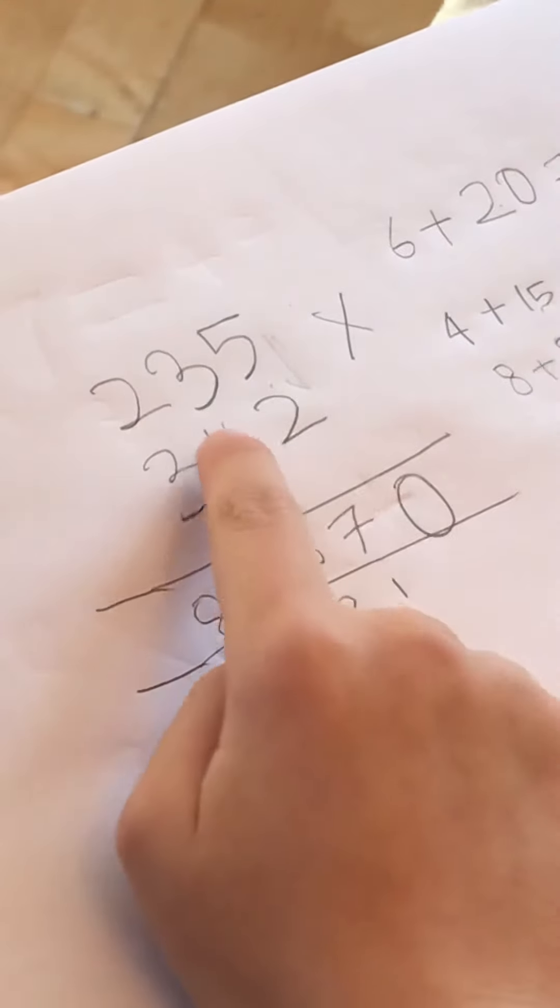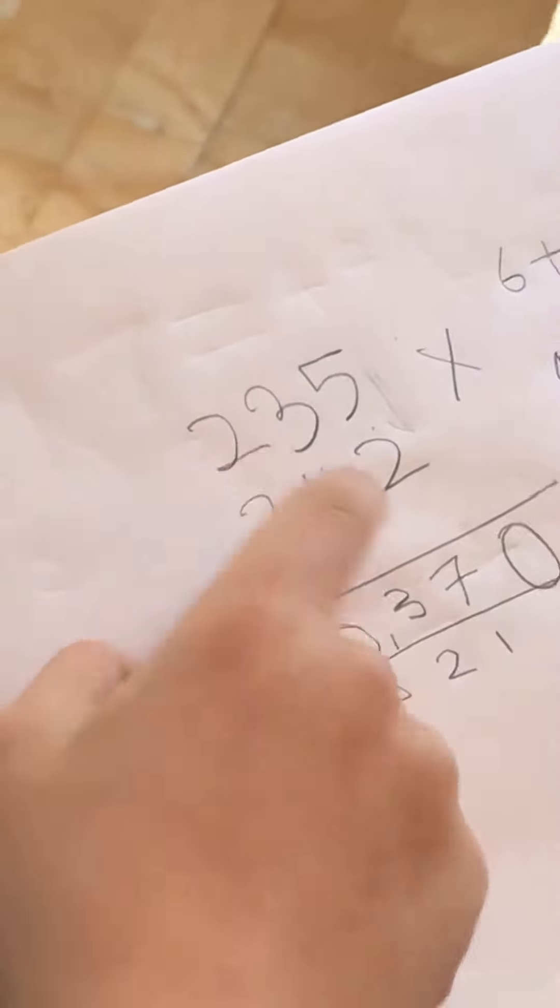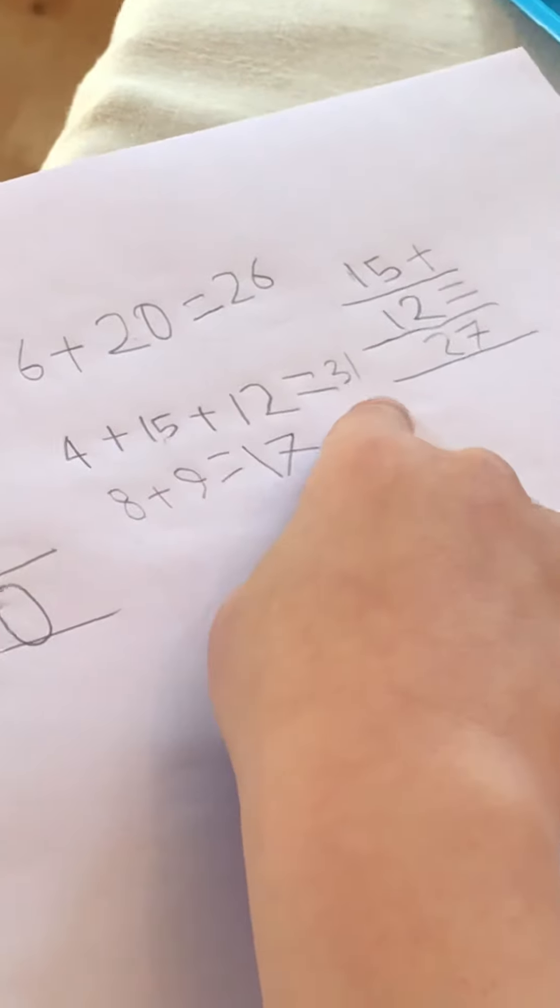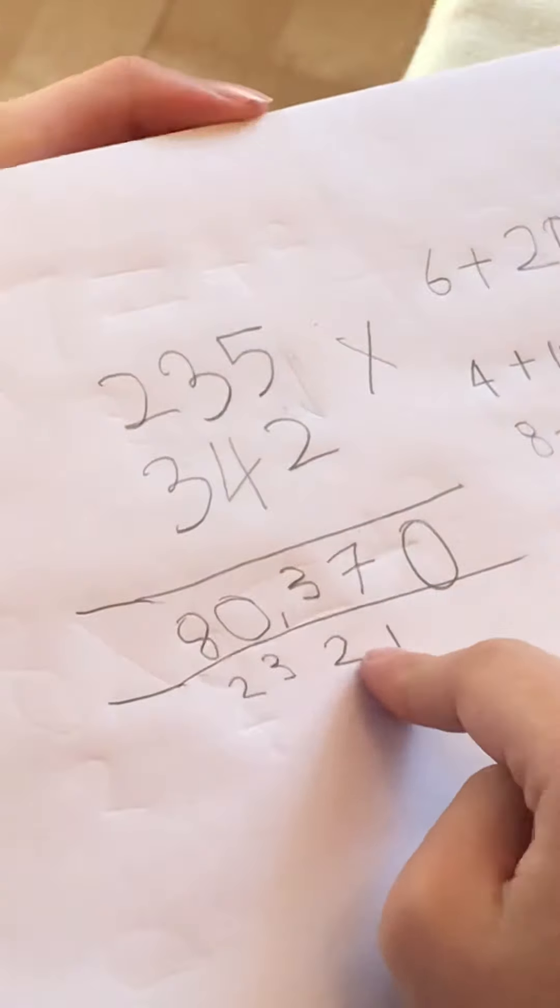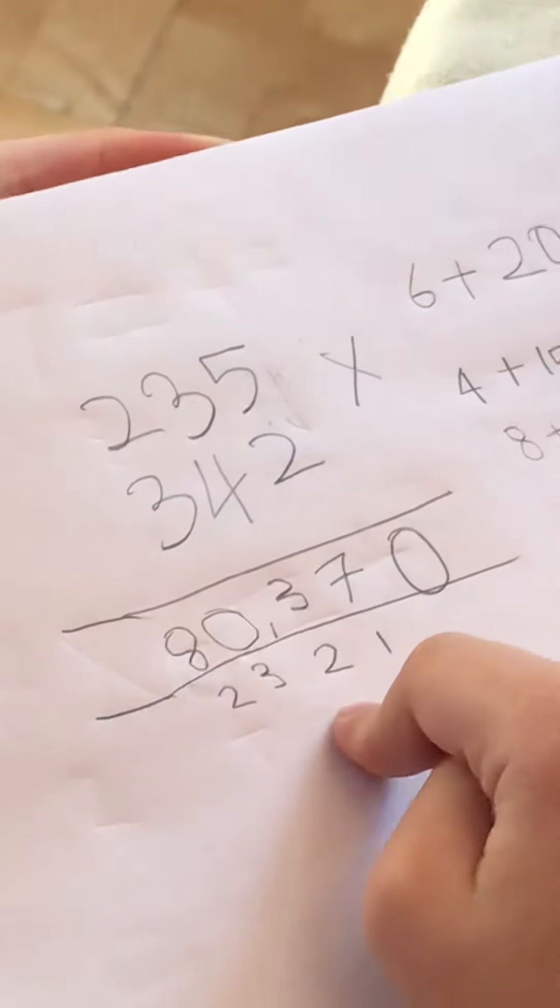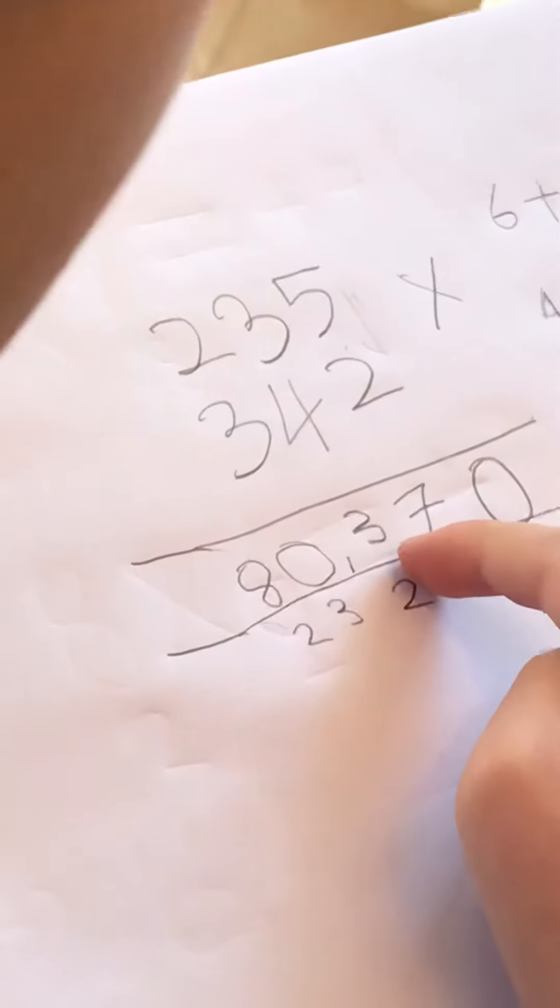And then we do 2 times 2, which is 4, and 5 times 3, which is 15, and 3 times 4, which is 12, and that makes 31. And we put 3, and because of the 2 here, we put a 33 and put the 3 here.